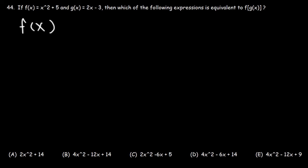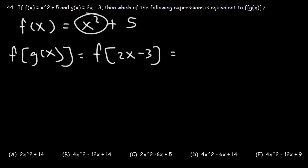So f(x) is x squared plus 5. To write an expression of f(g(x)), we can replace g(x) with what it's equal to. So g(x) is 2x minus 3. So everywhere we see an x, we're going to replace it with 2x minus 3. So this would be x squared plus 5, but instead of having x, we're going to have 2x minus 3 inside it.